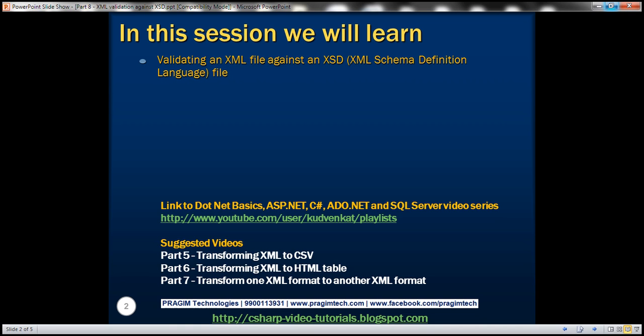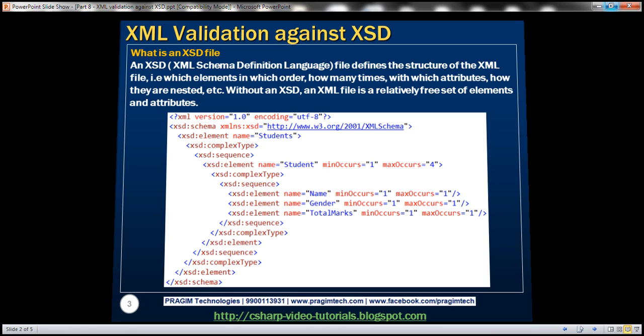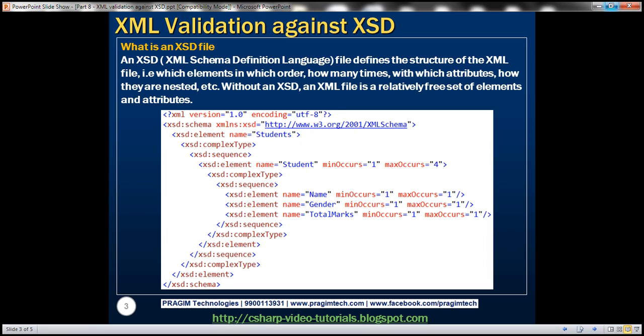An XSD file defines the structure of the XML file — that is, what elements should be present in the XML file, in what order those elements should be present, how many times these elements should be present, what attributes the elements should have, and how these elements should be nested. All these rules are defined in the XSD file.